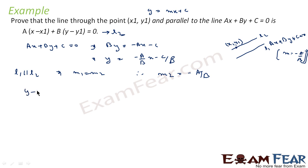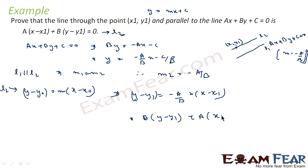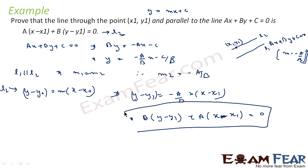The equation is Y minus Y0 equals M times (X minus X0). For line L2, substituting: Y minus Y1 equals minus A by B times (X minus X1). Multiplying both sides by B gives B(Y minus Y1) plus A(X minus X1) equals 0. And that is what we were asked to prove.